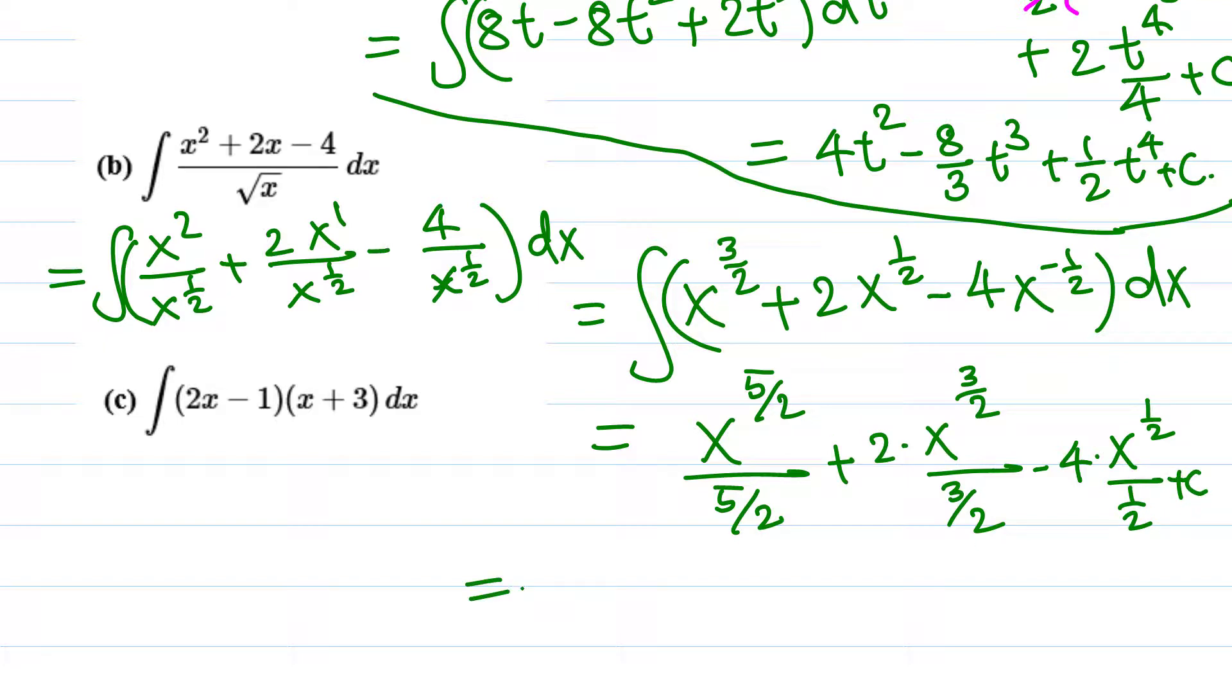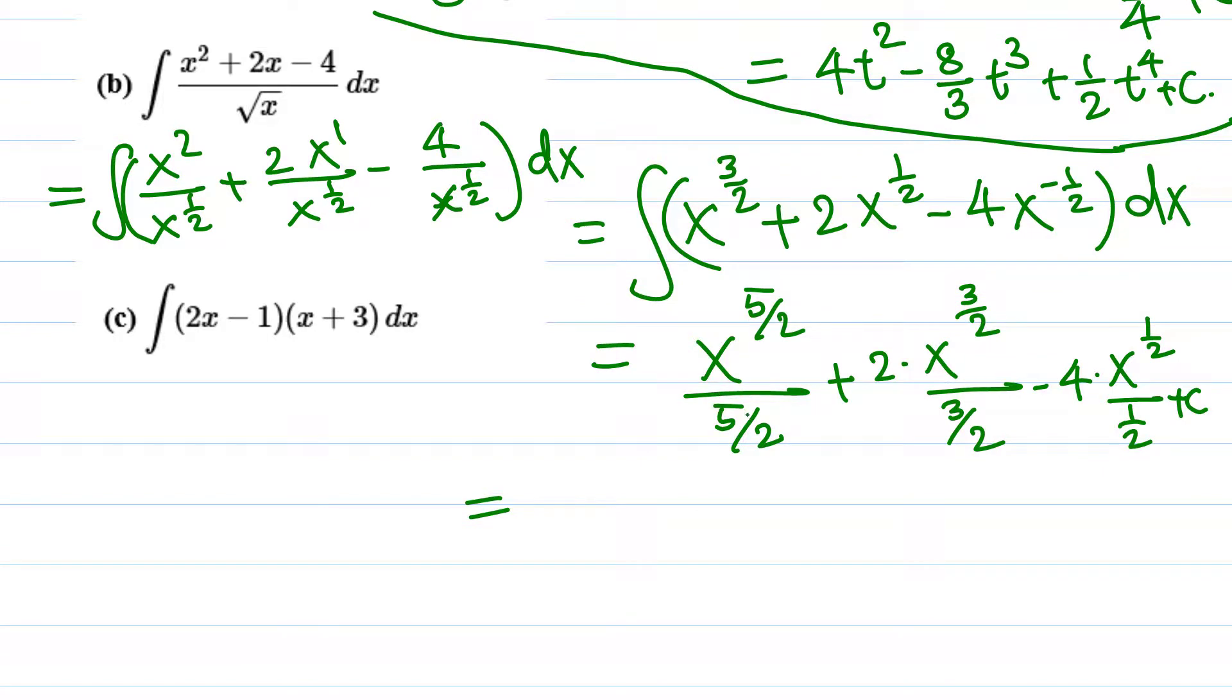We cannot write complex fractions. 5/2 in the denominator becomes 2/5 when we flip it, so 2/5 x^(5/2). Here 2 goes to the top, 2 times 2 is 4/3 x^(3/2). Minus, 1/2 becomes 2 when we flip, so 8x^(1/2), which is 8 root x if you like, plus C. That's the final answer.